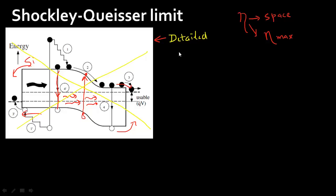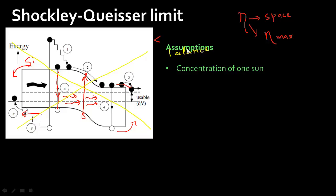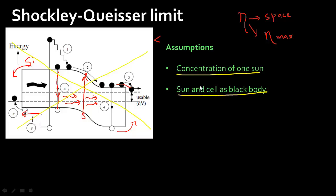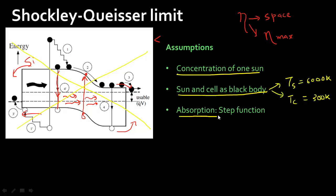Instead, Shockley and Queisser approached the problem using the method of detailed balance — a thermodynamic perspective. They made certain assumptions to solve the problem. The first was that the concentration of sunlight was one sun, with no concentrated optics. Another assumption was that the sun and the cell act as ideal black bodies — the sun at 6,000 Kelvin, and the cell at 300 Kelvin.